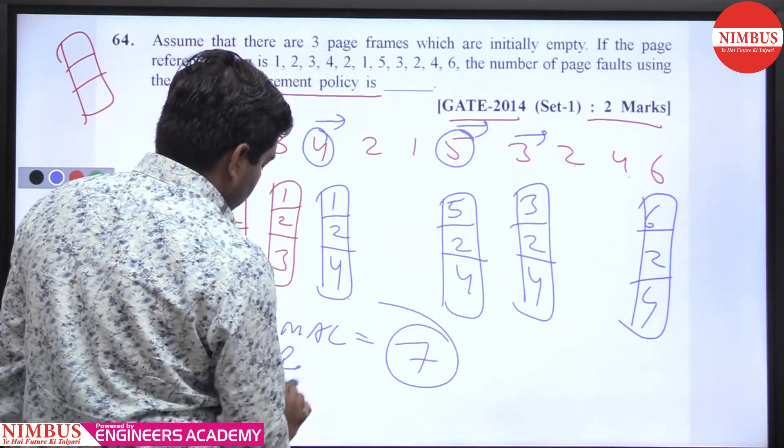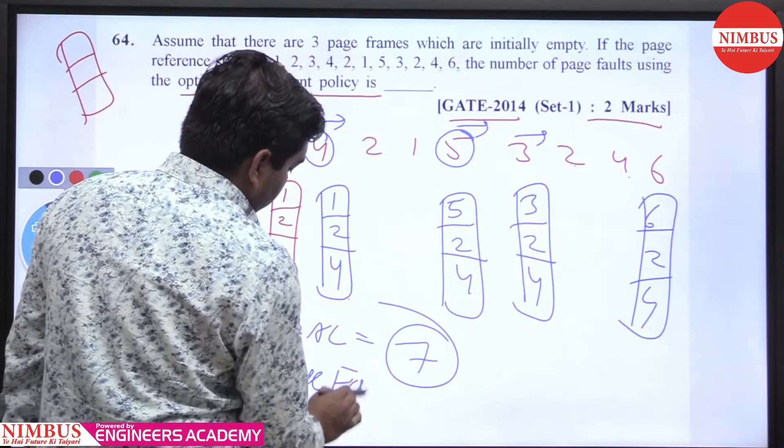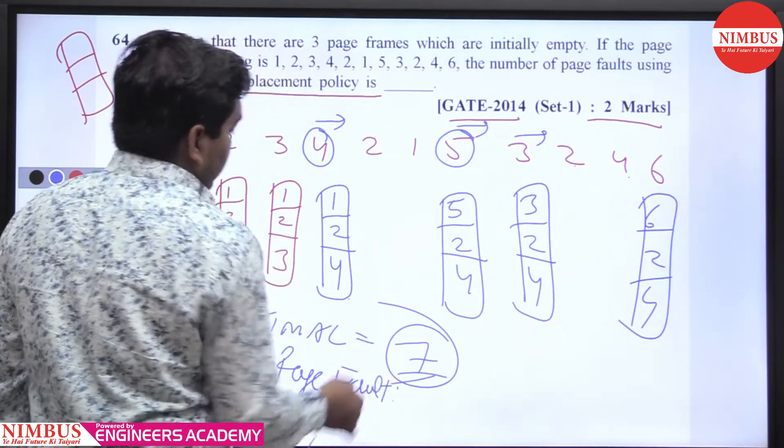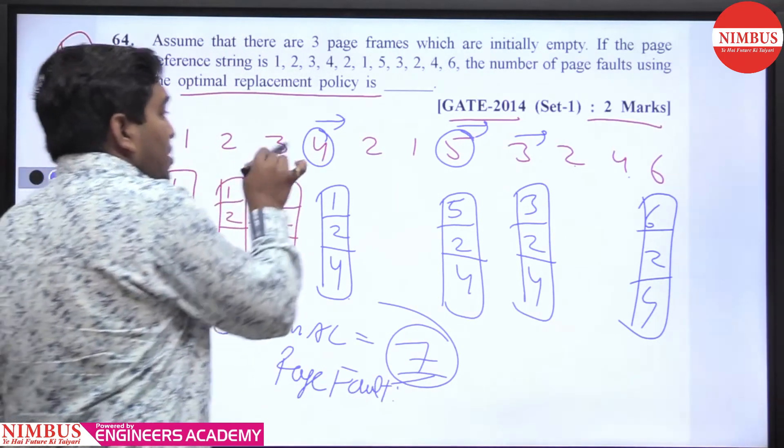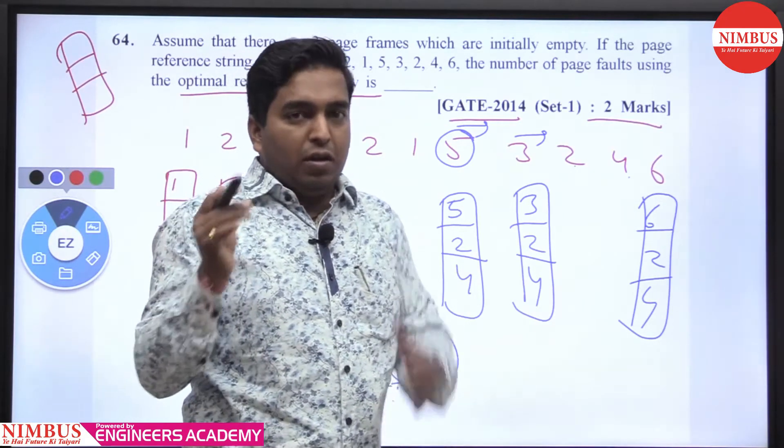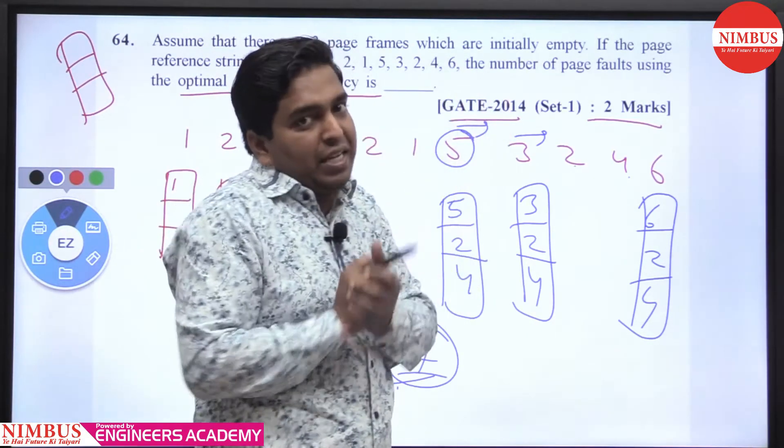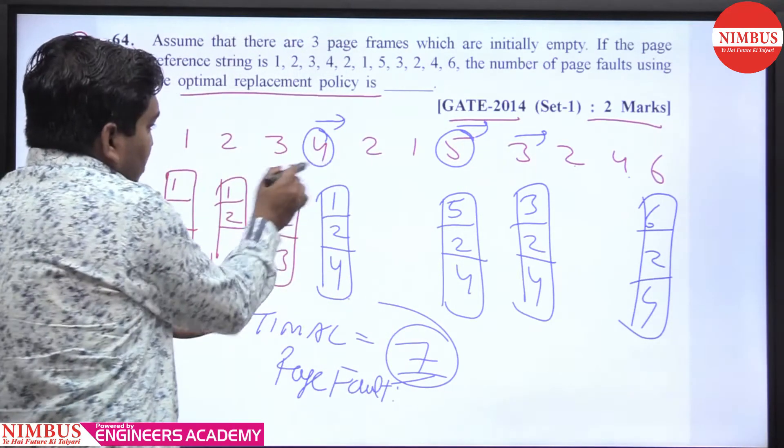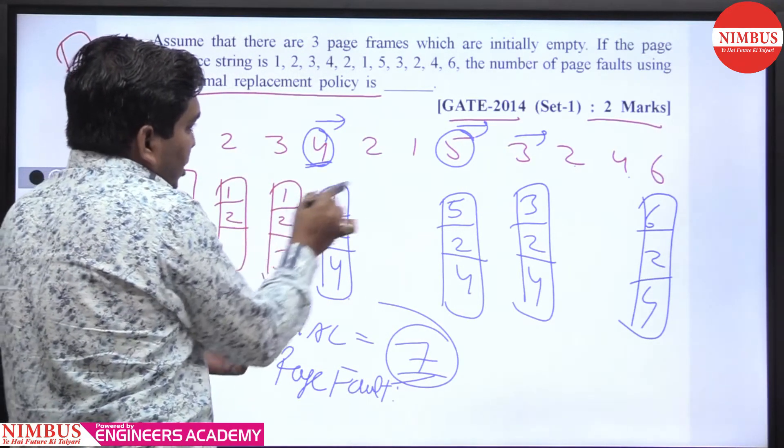This is clear because optimal says replace the page that will not be useful for the longest period of time, or replace the page with the last occurrence in the future string. Here you can see the progression through each page fault.